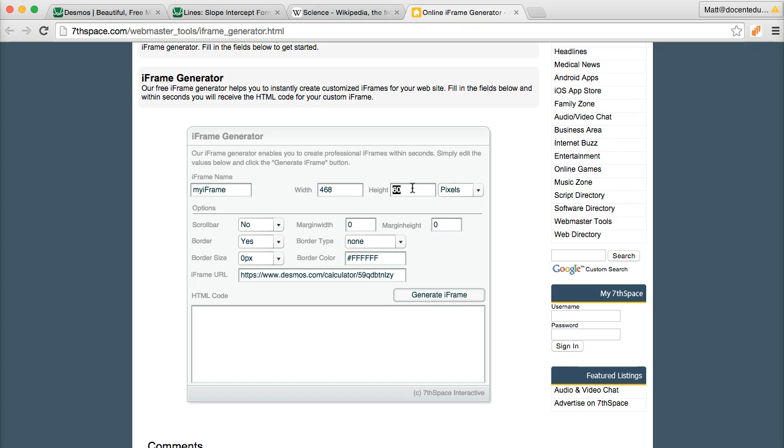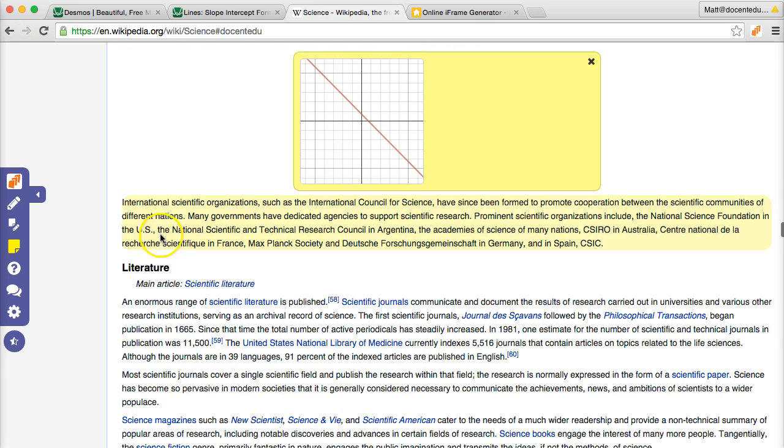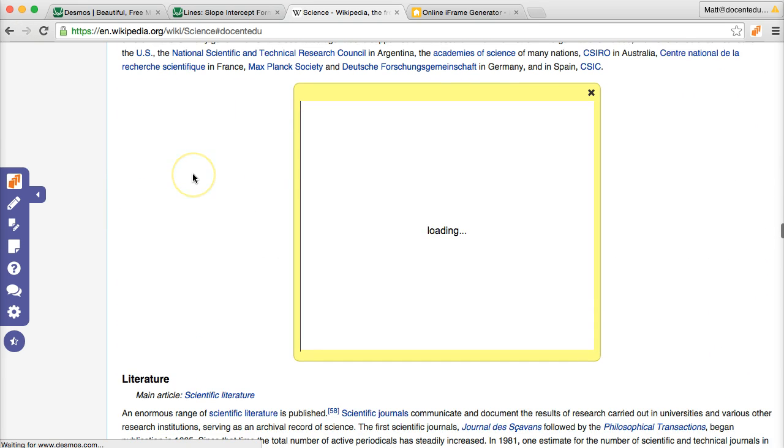I'm going to change this height because they set it at 60, but I want a lot more than that. So I'm going to change this to 400 and click generate iframe. It's that chunk of code that we want. I'll copy that and head back over here to paste it in.